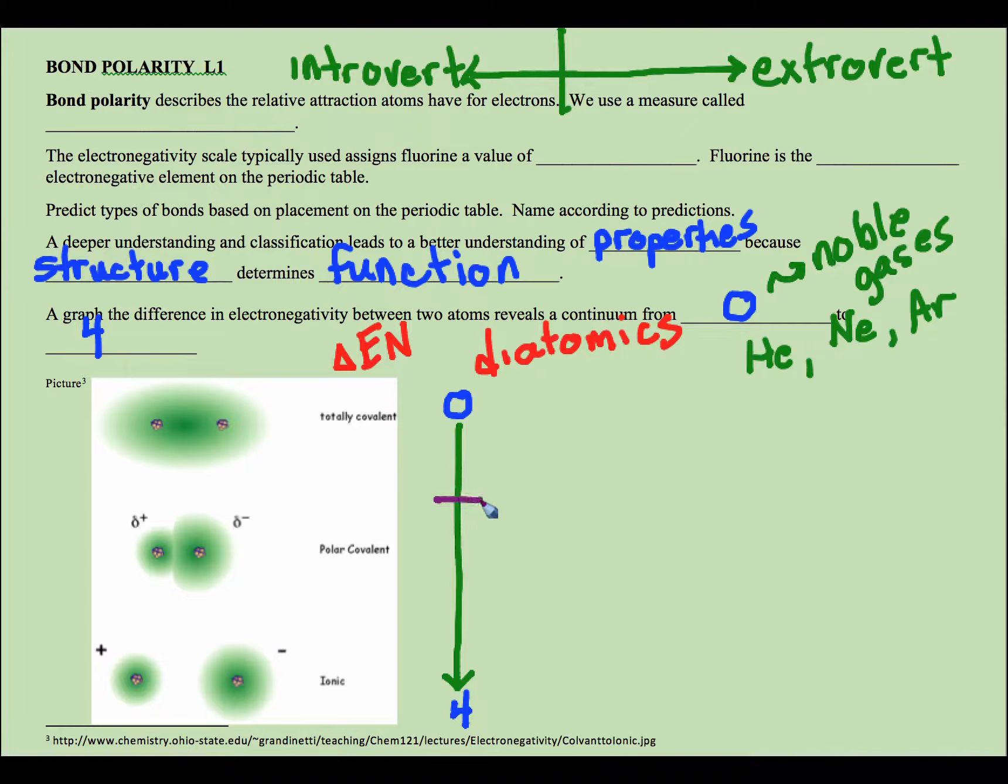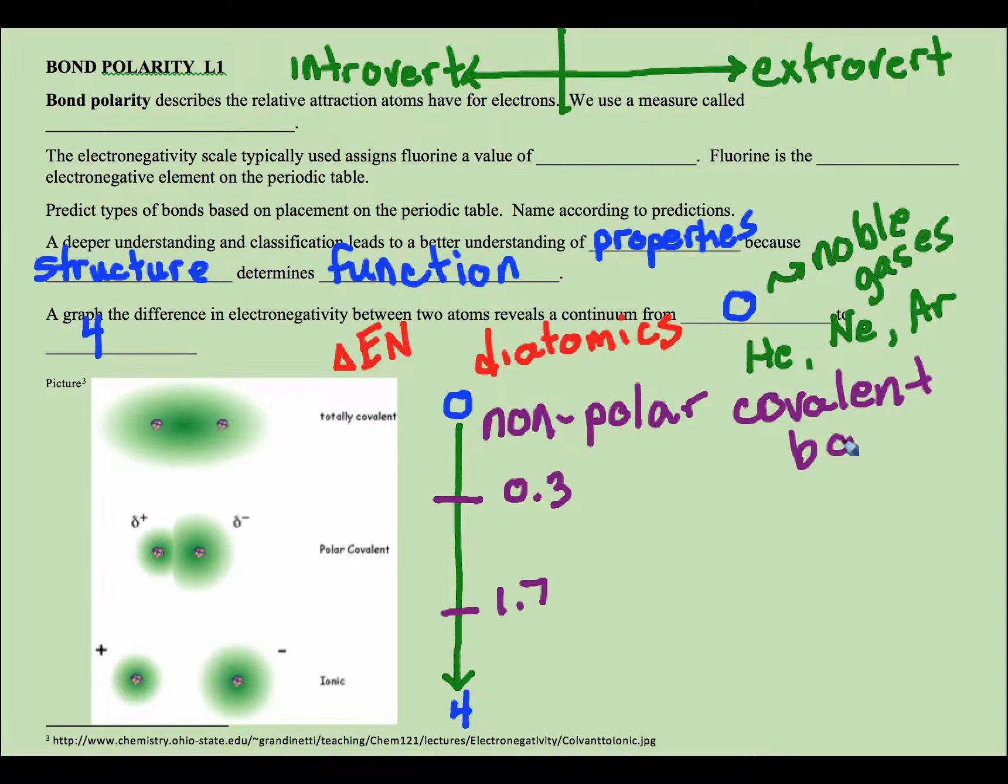Let's look at two lines in the sand that we draw. One of those lines happens roughly at point three, and the other happens roughly, different values, different books, this is not drawn to scale obviously, at one point seven. If it's lower than point three, we will call this a non-polar covalent bond. It's very important that we distinguish this as talking about bond polarity. Molecule polarity is another conversation, so we're only talking about bond polarity right now.